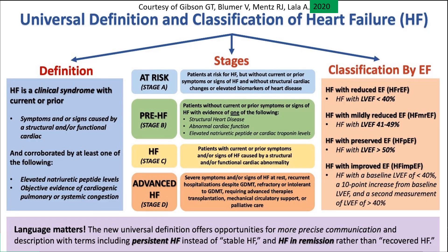A new classification published by the International Cardiac Societies committee in 2020 — done by the American, European, and Japanese cardiac societies — changed some of the classification criteria for heart failure. In this classification, especially based on ejection fraction, instead of two groups (heart failure with reduced EF and heart failure with preserved EF), they divided it into four groups.